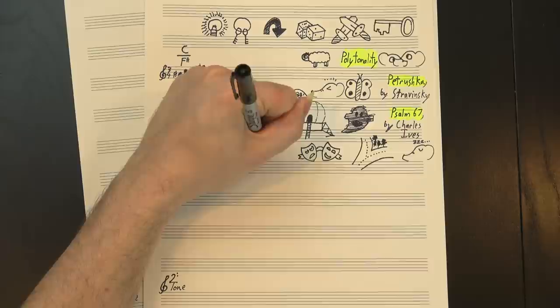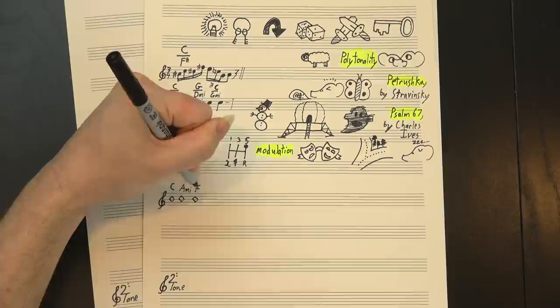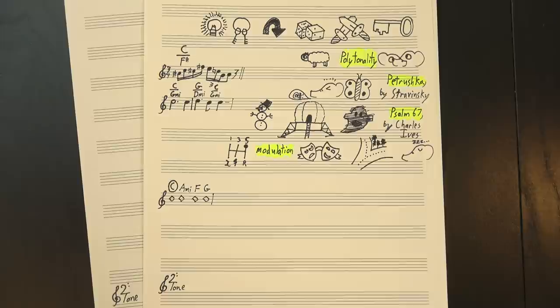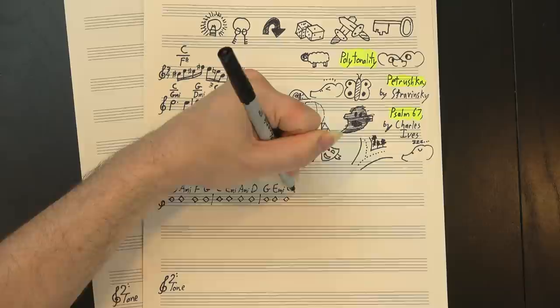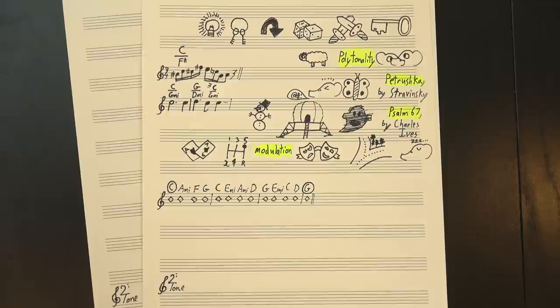We can accomplish that pretty easily through modulation or changing keys. If I play this, it pretty quickly establishes C as our point of resolution. But then if I do some sneaky things with the chords, suddenly we're resolving to G. That's two different points of resolution. Simple, right?